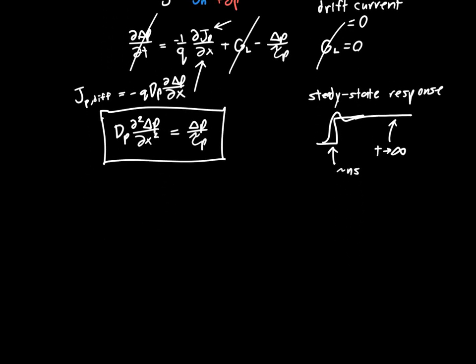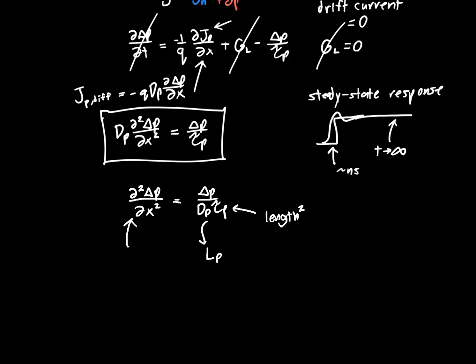We rearrange this a little by dividing both sides by D_P. Since we're differentiating twice with respect to distance, the bottom term must have units of length squared. So we make a substitution and replace D_P times tau_P with a term we'll call L_P squared. Rewriting, it becomes the second derivative of delta P equals delta P over L_P squared. This is partly to simplify our lives, but also to physically interpret what's going on — L_P is the so-called diffusion length, the product of the diffusion coefficient and the recombination lifetime.